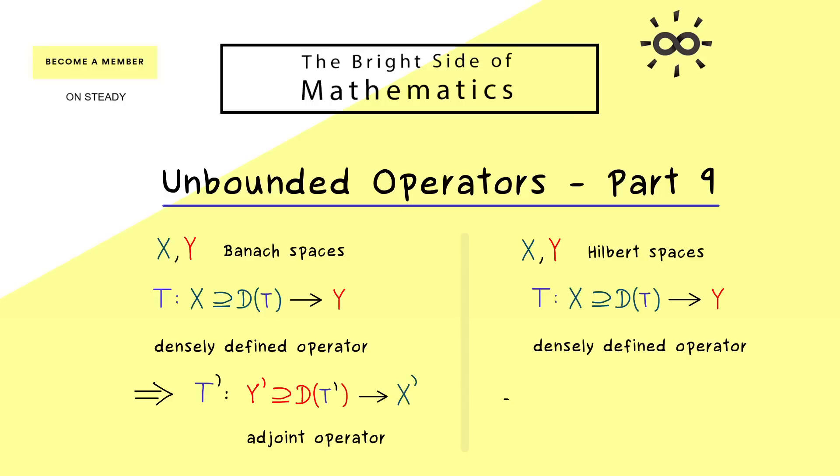And we already know this one, we call it T*. There we also change the direction, so we go from Y to X, but we don't have the dual spaces involved at all. Hence, this adjoint operator is easier to deal with, because we don't change the spaces that are involved.